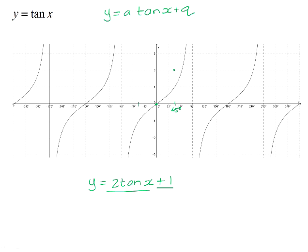At negative 45°, instead of having a point at negative 1, there will be a point at negative 2. So the graph of 2 tan x is stretched — pulled up from its original position. Then for 2 tan x plus 1, we shift those points up by 1 unit, translating the whole graph up by 1 unit. That gives us the graph y equals 2 tan x plus 1.